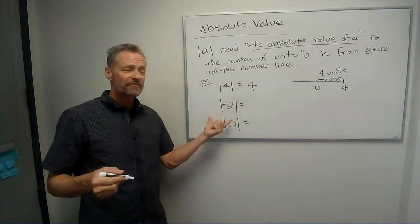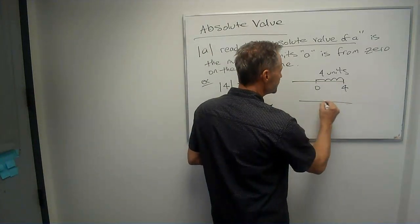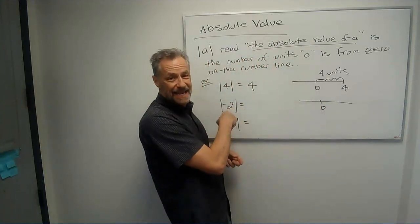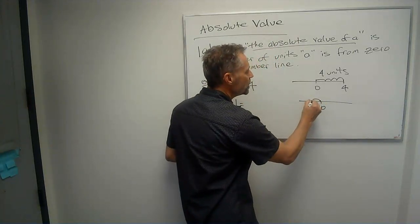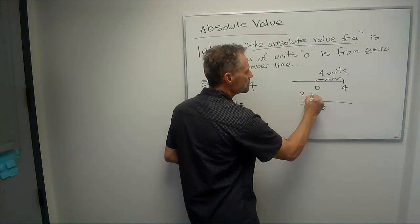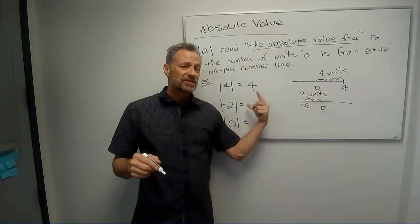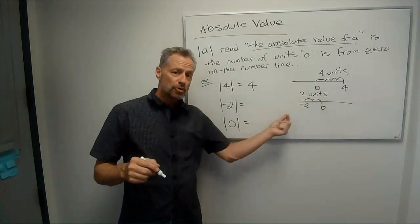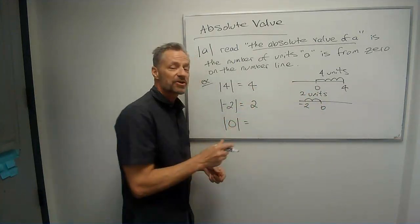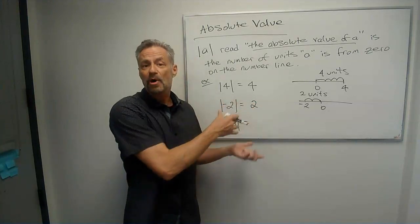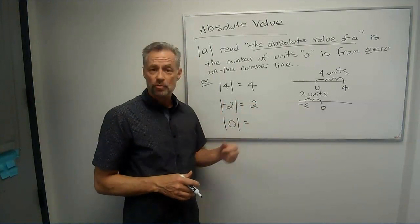Similarly, the absolute value of negative 2. Well, again, let's go to zero. To get to negative 2, I go 1, 2 units to the left. Now, it doesn't matter the direction with absolute value. Since it's 2 units away, the absolute value of negative 2 is the number positive 2, 2 units away.